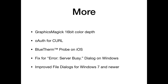We got support for the Blueterm probe for iOS — a probe to measure temperature of a liquid, transferring temperature via Bluetooth to your iOS device. We got a fix for the 'server busy' dialog on Windows, which can occur when communication isn't working well; the plugin installs a callback to tell Windows to come back later. We also got improved file dialogs for Windows, upgrading the API to get the newer dialogs for Windows 7 and newer.